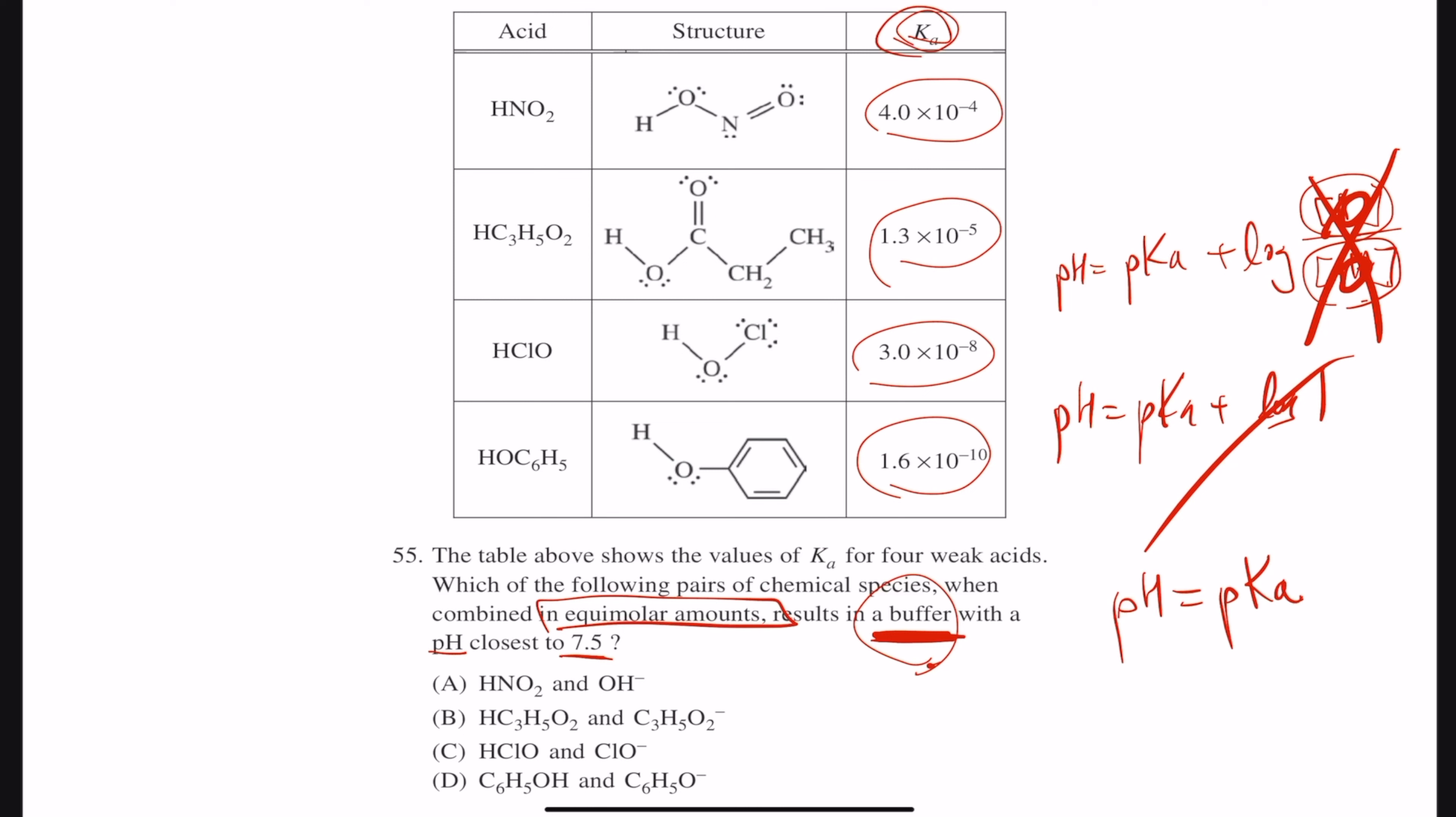Well, you're given the Ka value, so how do you calculate the pKa? pKa, just like the pH calculations, is negative log of Ka, and this is also in the front of the packet on your formula sheet, so you really don't need to memorize this anyway.